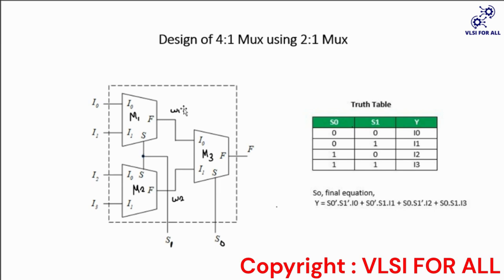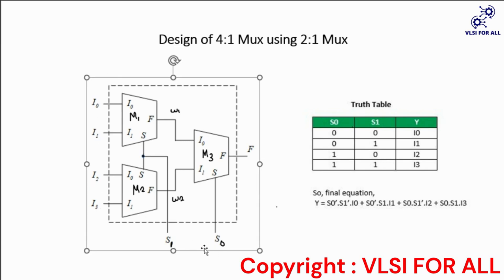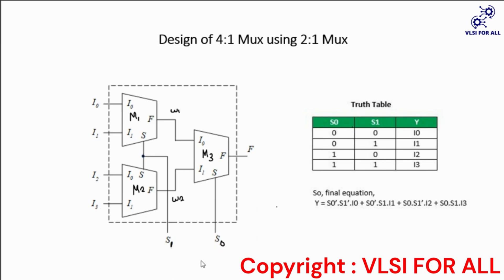We designed the 4x1 multiplexer using three 2x1 multiplexers: m1, m2, and m3. This is the top module for the 4x1 multiplexer. Four inputs are given: i0, i1, i2, and i3. These two are selection lines s1 and s0, and f is the output.